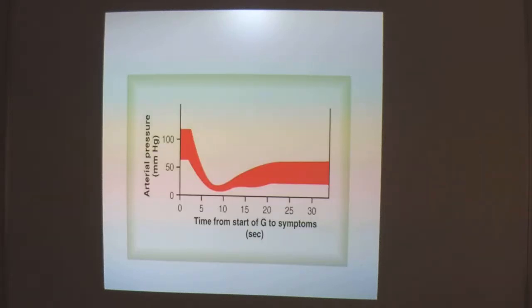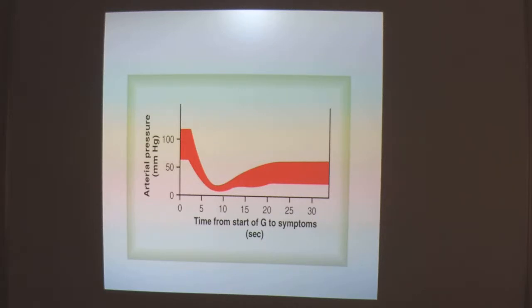This graph shows changes in systolic and diastolic pressure in the upper body when a centrifugal acceleratory force of more than 3G is suddenly applied to a sitting person. Note that both systolic and diastolic pressures fall below 22 mmHg for the first few seconds after acceleration begins. Then the systolic blood pressure returns to approximately 55 mmHg whereas diastolic blood pressure returns to approximately 20 mmHg within 10 to 15 seconds. This secondary recovery is caused by activation of the baroreceptor reflex.